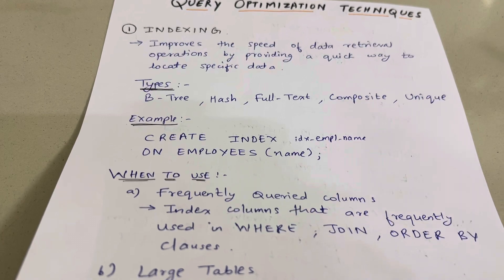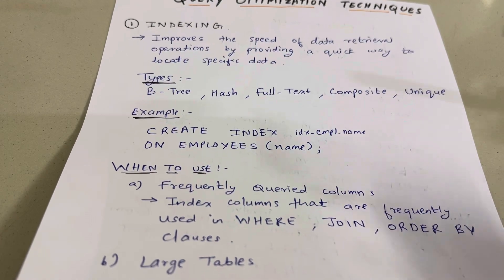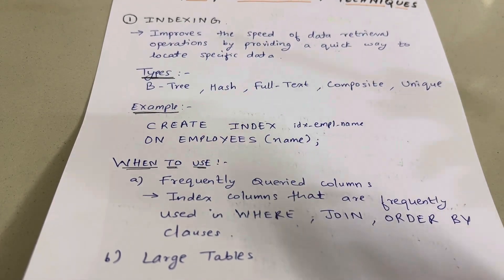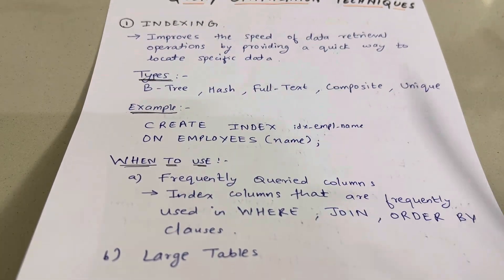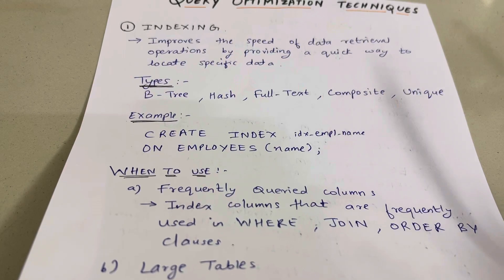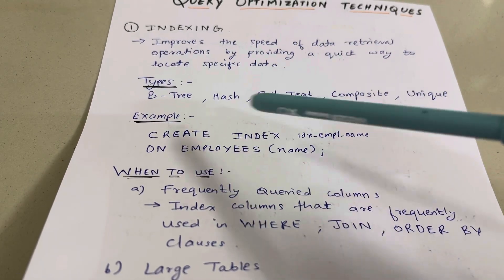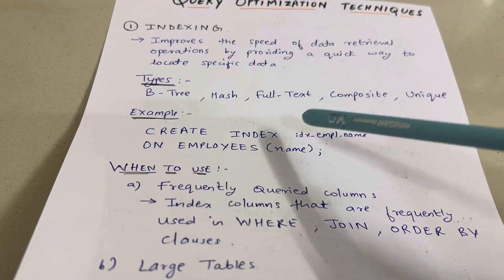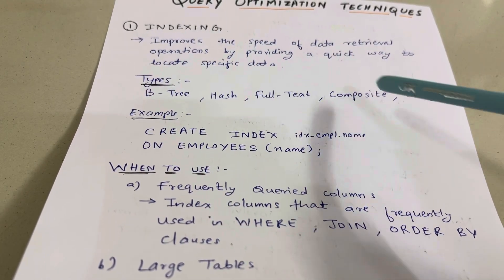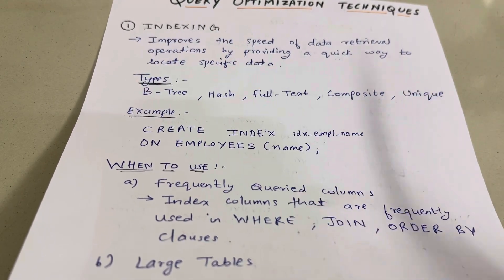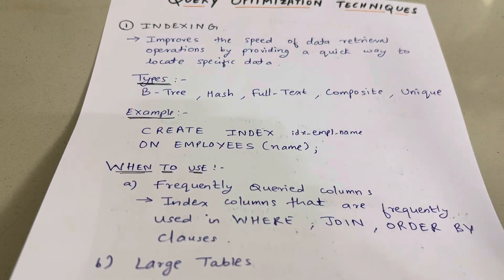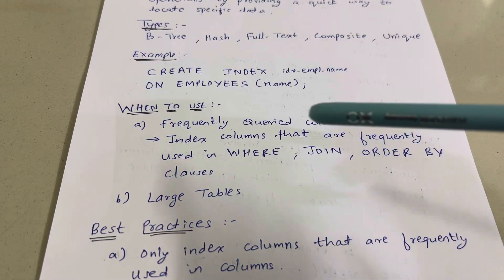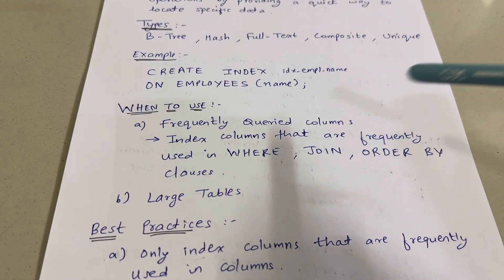The speed of the query will improve because we have created an index on that particular column. There are several types of indexes: B-Tree index, Hash index, Full-Text index, Composite index, and Unique index.